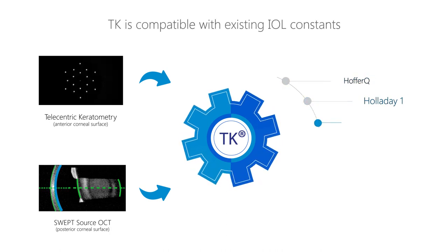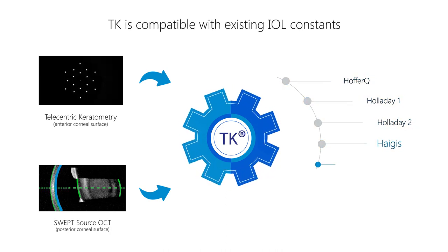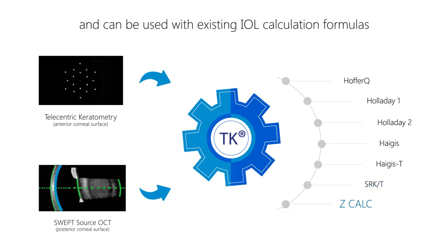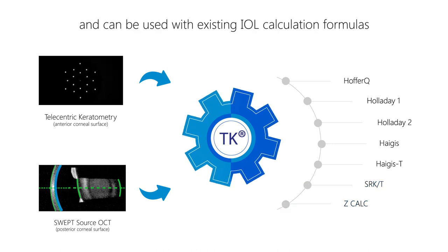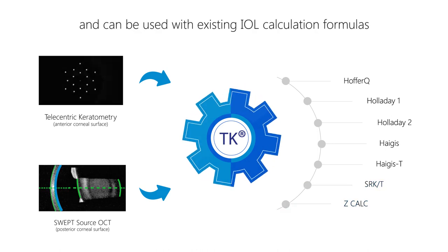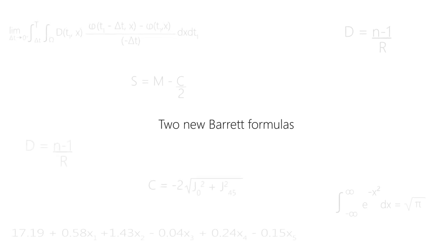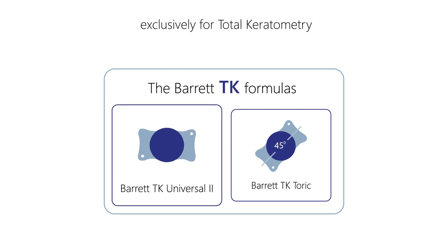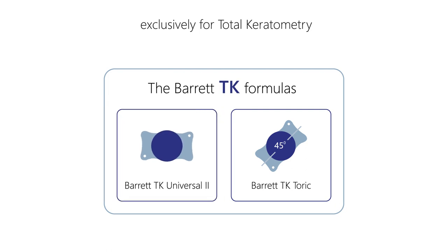Total keratometry is compatible with existing IOL constants, and can therefore be used in existing IOL calculation formulas. What's more, Graham Barrett developed two new Barrett formulas exclusively for total keratometry: the Barrett-TK formulas — Barrett-TK Universal II and Barrett-TK Toric.